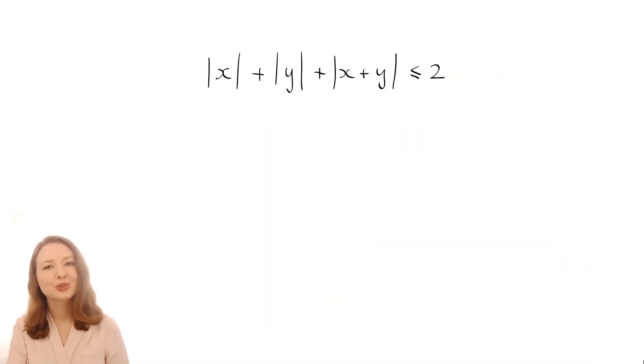So I'll start you off with something not too hard. 5% of students got this one right, so it's not too bad. The question is to find the area of the region defined by this inequality: |x| + |y| + |x+y| ≤ 2. You might like to pause the video here, have a go at that, and then come back and see my solution.